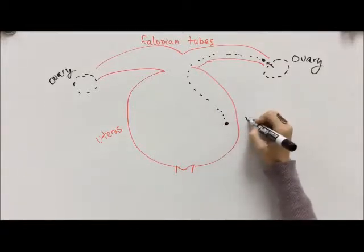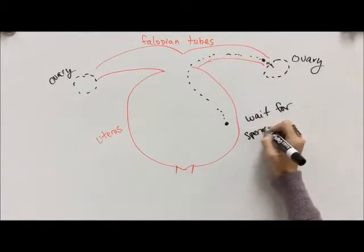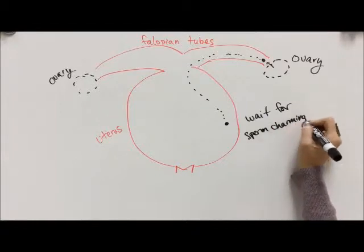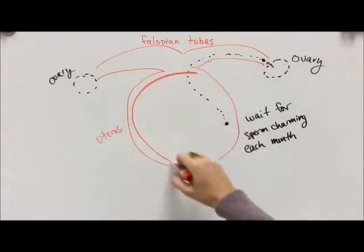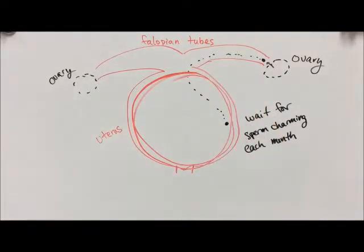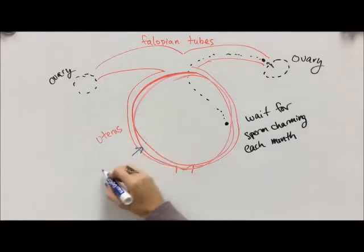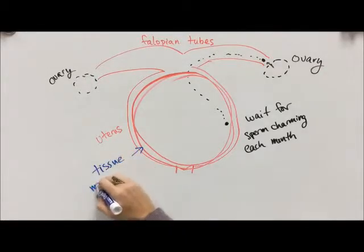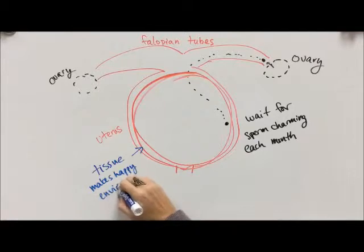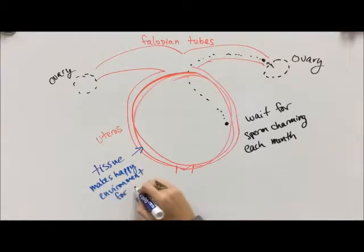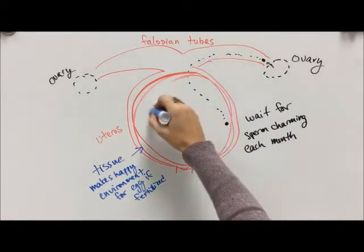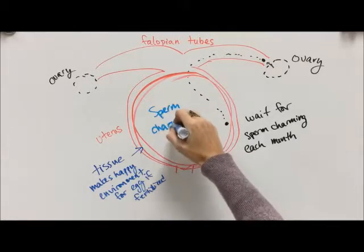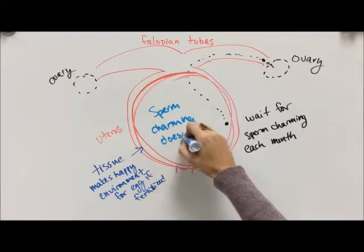So inside of the ovary there is an egg, and every month an egg is released and it travels down the fallopian tube into the uterus. And that little egg waits for sperm charming to arrive. Every month a new egg waits for sperm charming, but for the most part, you know, she just sits around. And during that time, the lining of the uterus thickens, and it does that so that if sperm charming does arrive and we have a baby starting to form, then there's a nice environment for that egg - nice warm, tissue-filled environment.